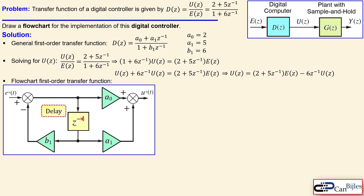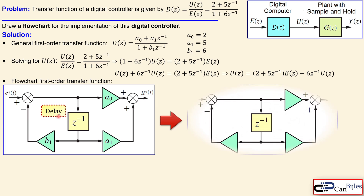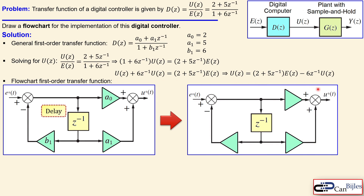Looking at the empty diagram template, the only values you need to substitute are a0 = 2, a1 = 5, and b1 = 6, as identified from the comparison table. Note that the left summation has a plus and a minus — there is negative feedback — while the right summation is simply a summation where you add the signals together.